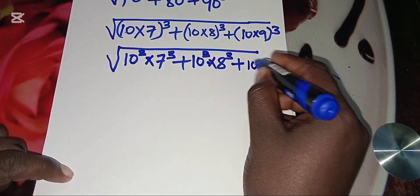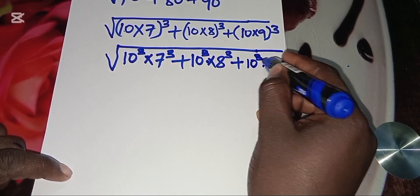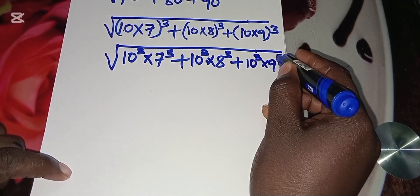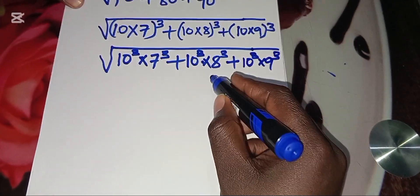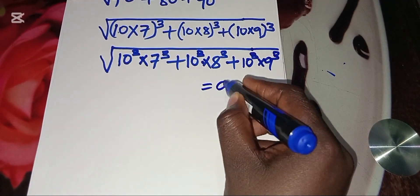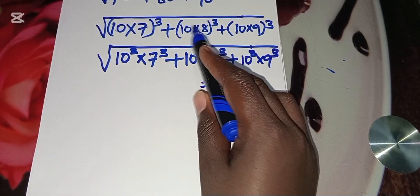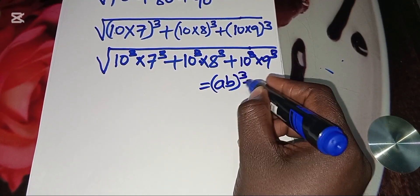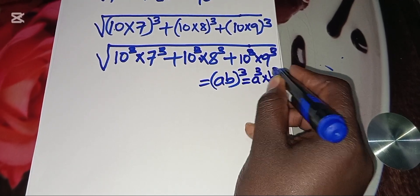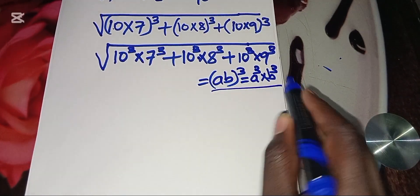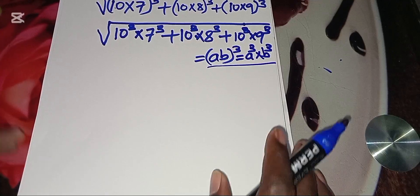The same case applies here — we have 10 cubed multiplied by 9 cubed. This is simply because if we have (ab) cubed, we can express this as a cubed times b cubed. That is the property we are applying here.